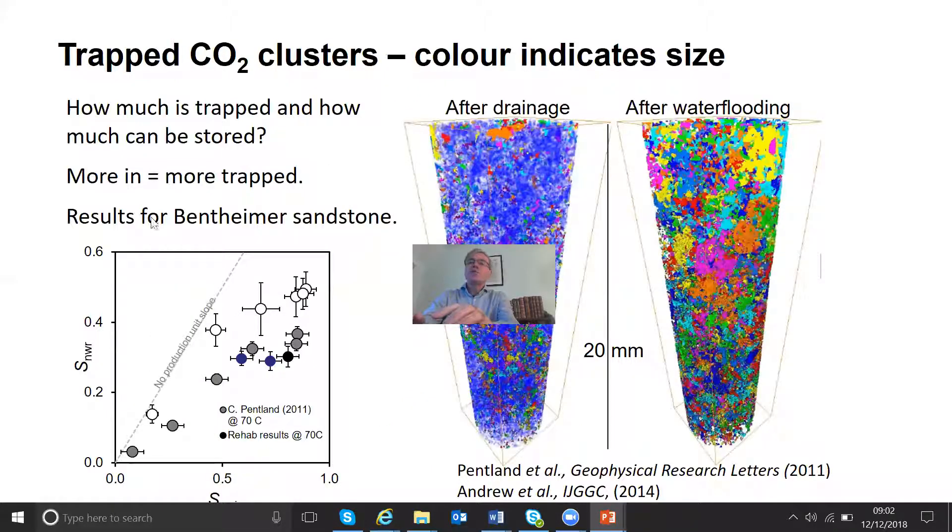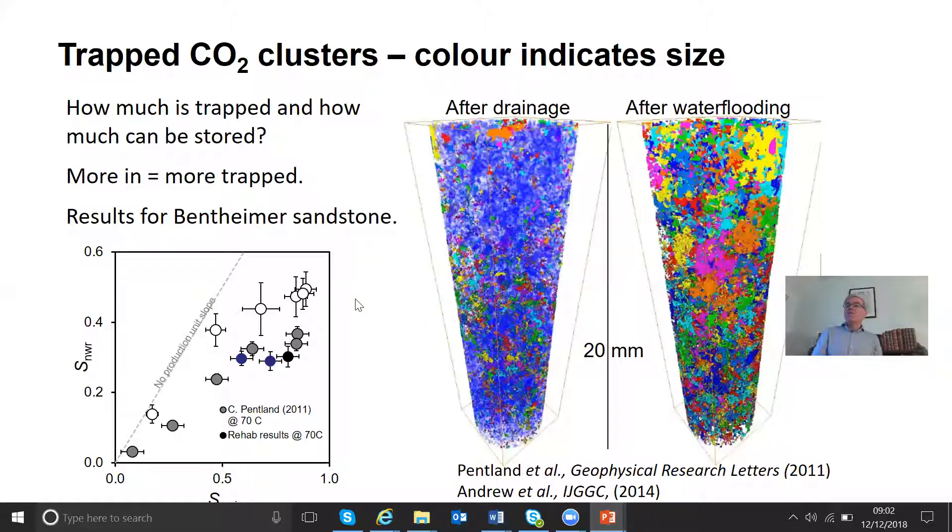So now what we're showing here is just some pictures of what this means. So for oil recovery, if we have a water wet rock, the oil can be trapped in the centers of large pores. And this is bad for recovery. Leaves the oil underground.